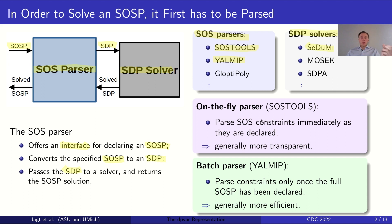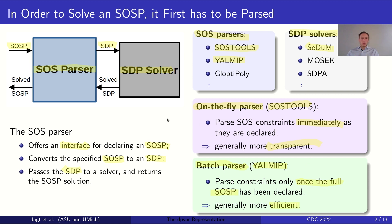We distinguish two approaches to parsing. On-the-fly parsing, as done by SOSTOOLS, converts each SOS constraint to an SDP constraint as soon as the user declares it. Batch parsing, as done by YALMIP, converts the SOSP to an SDP only once the full optimization problem has been declared. Both approaches have their merits — batch parsing tends to be more efficient, on-the-fly parsing tends to be more transparent — but either way both provide the same service of converting SOS programs to semi-definite programs.